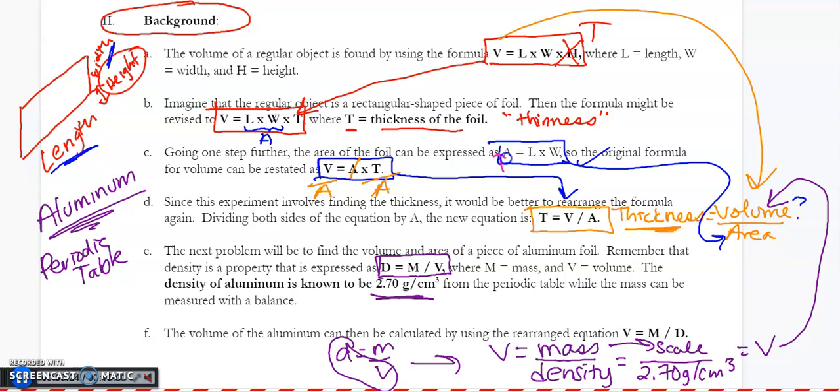Number one, I have to figure out the area. The area is very important. Number two, I'm going to have to figure out its mass from the scale, then calculate our volume and plug that in. And number three, I'll use this thickness equation to get volume divided by area.